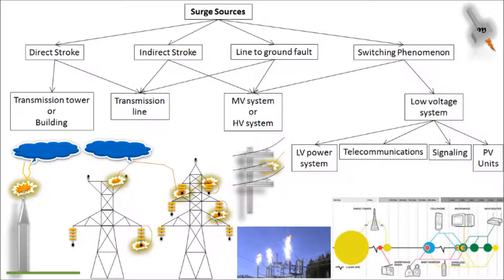A line-to-ground fault is a situation in which a phase conductor accidentally falls on a surface at ground potential, creating a fault. In the case of switching phenomena, a circuit breaker or isolator switching creates momentary fluctuations in voltage and current. There can also be situations where switching elements like IGBTs and semiconductor switches generate high-frequency pulses which interfere with nearby low-voltage equipment.